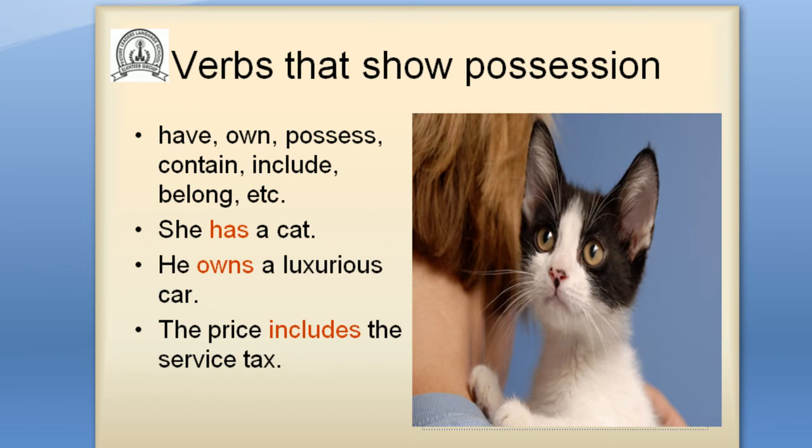Type 2: verbs that show possession — having things — have, own, possess, contain, include, belong, etc. For example: she has a cat. He owns a luxurious car. The price includes the service tax.